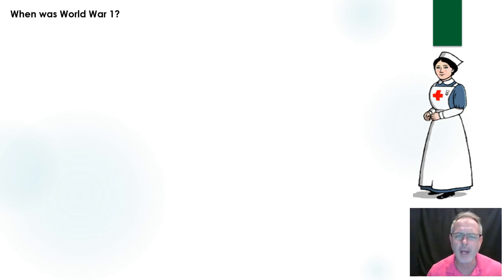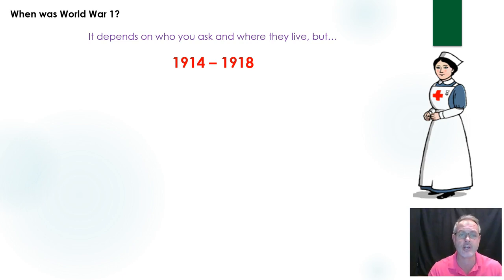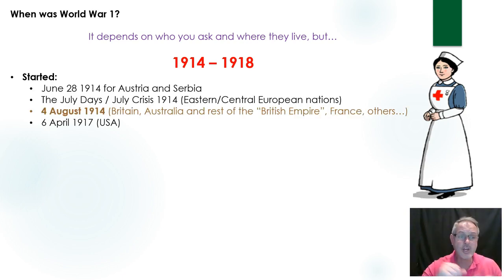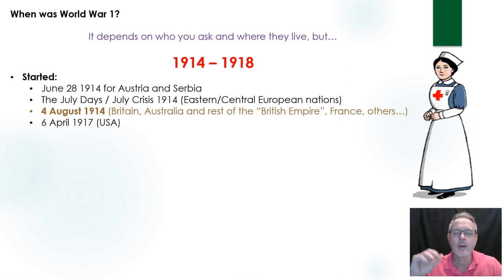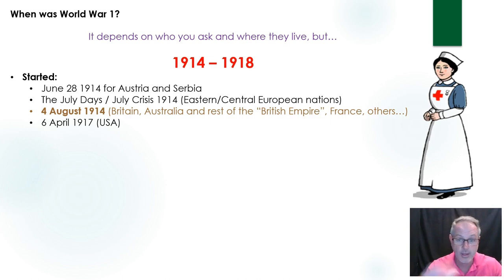Let's push on to when this war was — part of the name '1914-18 war' gives it away. But like all the big questions in history, answers can become complicated. Most of the time we say 1914 to 1918, but when the war specifically started will vary depending on who you ask and where they live. The war started on a range of dates in June, July, or August 1914. It's June 28 if you happen to live in the Balkan area — Serbia and the southern borders of Austria. Then there's a period called the July Days or July Crisis, in which a number of nations — Eastern and Central European countries like Russia, Hungary, and Montenegro — were drawn into the war.